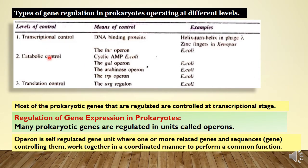Catabolic control is done with the help of cyclic AMP (cAMP) in E. coli. It has a very important role linked with glucose, which we will discuss when we cover lac operon regulation.